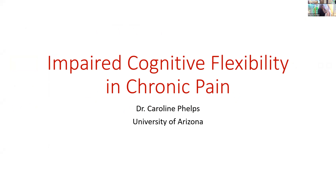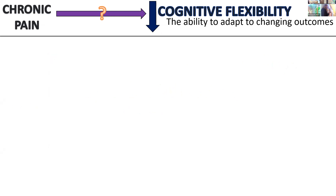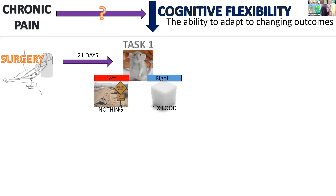We often think about chronic pain as a disorder of sensation, but it wreaks havoc with many systems, including cognition. In this study, I wanted to see how chronic pain affects cognitive flexibility — the ability to adapt to changing outcomes. I used a rodent model of chronic pain: ligating the L5 and L6 lumbar nerves, which causes a prolonged chronic pain phenotype. I then trained rats on a lever-pressing task. Pressing the left lever gave no reward; pressing the right lever gave one sugar pellet. After a week, we changed it — pressing the left lever now gave four sugar pellets, while the right still gave one.